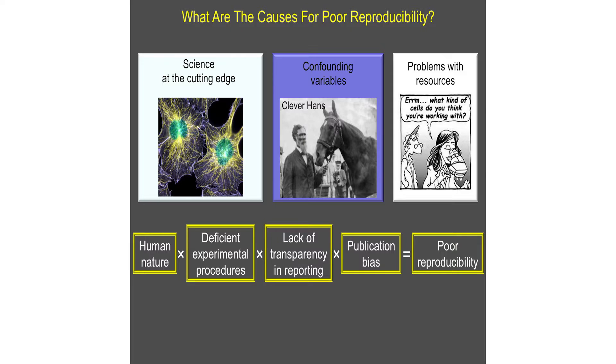Problems with reproducibility are, to a large extent, because of how we do the science and how we report it. Investigators have biases, and these biases are unintentional and unconscious.